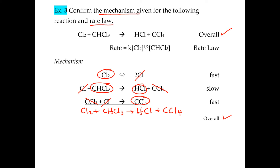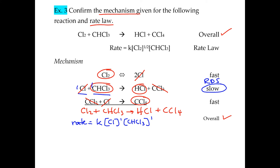Now we write the rate law by looking at the slow step, which is the rate-determining step. That step contains Cl and CHCl₃, each with a coefficient of 1, so each gets an exponent of 1. We then check whether these are actual reactants in the overall equation. Cl is not the same as Cl₂, so Cl cannot stay in the rate law. CHCl₃ can stay. We need to substitute out the Cl.